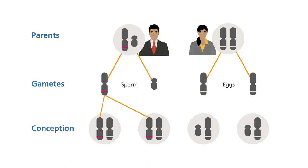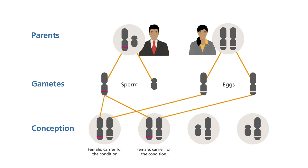The first two possibilities show a child who has inherited the father's X chromosome, and therefore will be a girl. As the father's X chromosome has the altered gene for the condition, all his daughters will be carriers for the condition, and they could pass on the altered gene to their children.